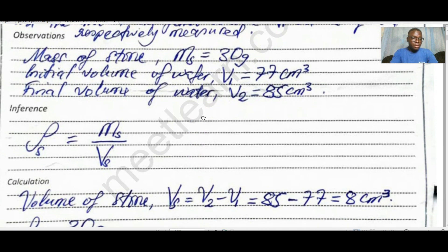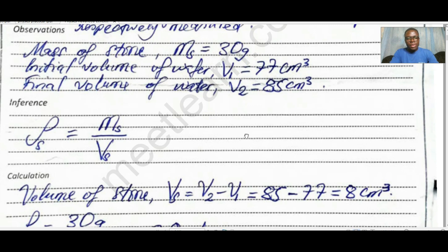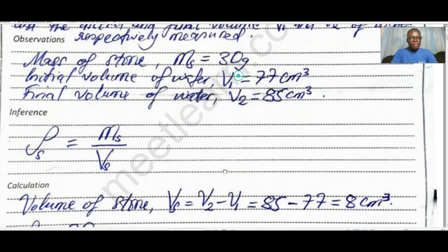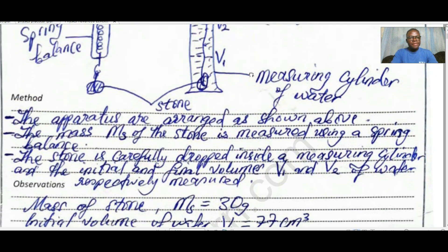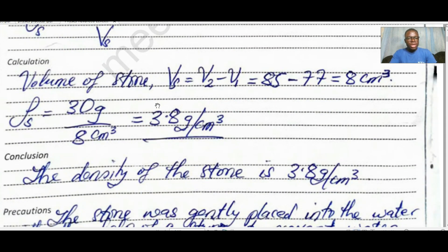The inference is simply the formula: the density of a solid equals the mass of the solid divided by the volume of the solid. For our calculation, we get the volume of the solid by taking the final volume minus the initial volume: 85 minus 77, which gives us 8 cm³. That is the volume of our irregular object. The mass was 30 grams, so we divide to get approximately 3.8 grams per cm³.